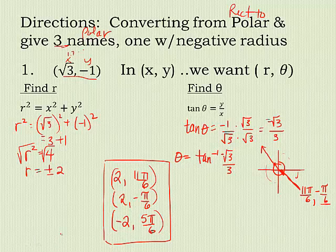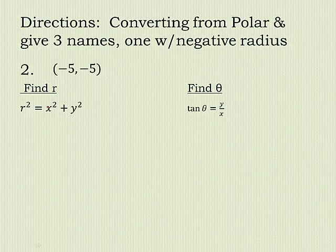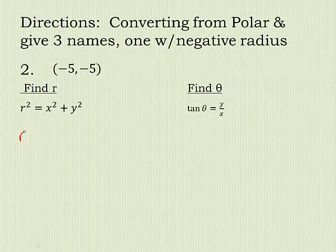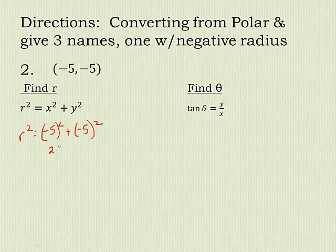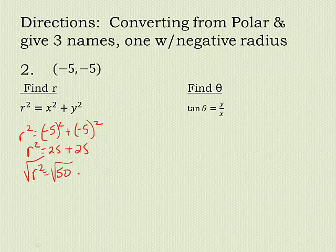Alright, let's try another one. Let's try this one. Negative 5, negative 5. So r squared is going to be negative 5 squared plus negative 5 squared. So it's 25 plus 25 equals r squared. So r squared equals 50. Take the square root. We know 50 is 25 times 2. So I can take a 5 out. It's plus or minus 5√2. That is my r.